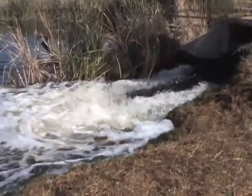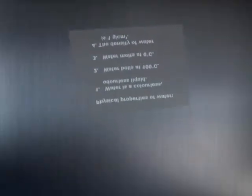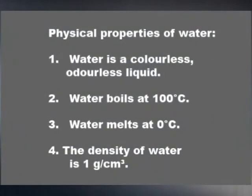Water has many special properties and that's why it's so important to us. What are the special properties of water? Water has many unique physical and chemical properties — anyone can test for them. The physical properties of pure water are: 1. Water is a colourless, odourless liquid. 2. Water boils at 100 degrees Celsius. 3. Water melts at 0 degrees Celsius. 4. The density of water is 1 gram per cubic centimetre. Melting and boiling points are affected by atmospheric pressure. The higher you go above sea level, the lower boiling points will be, so readings might differ slightly depending on altitude.